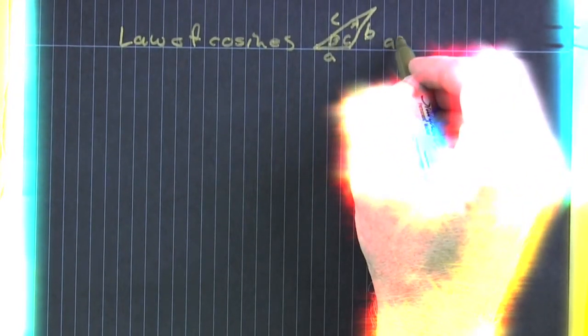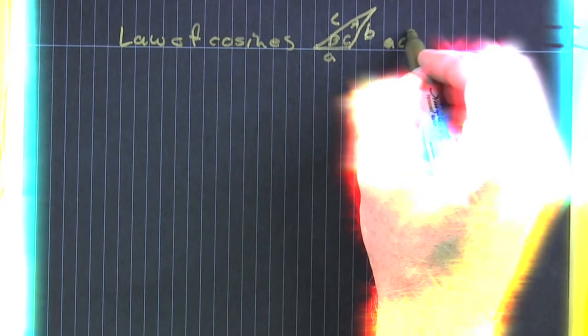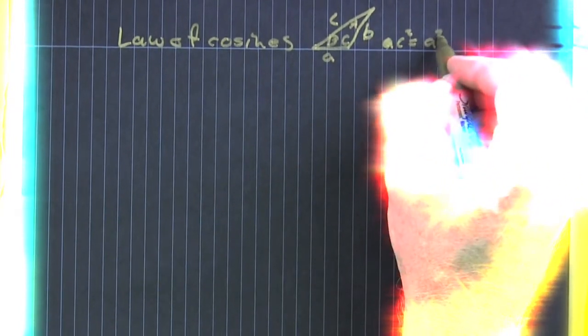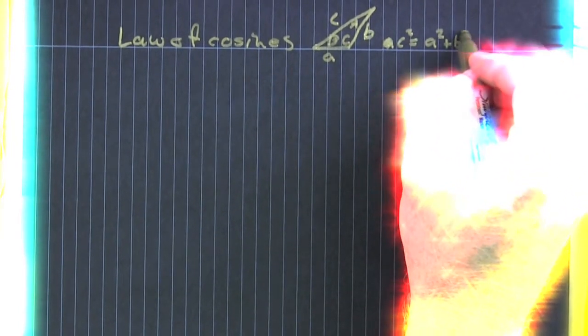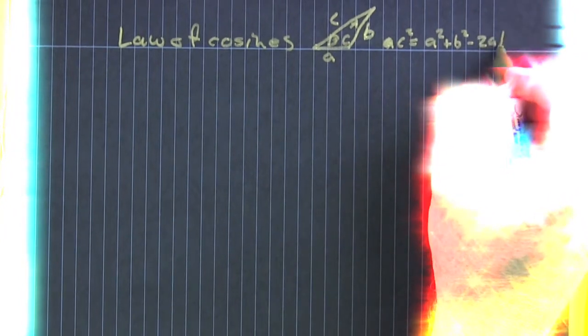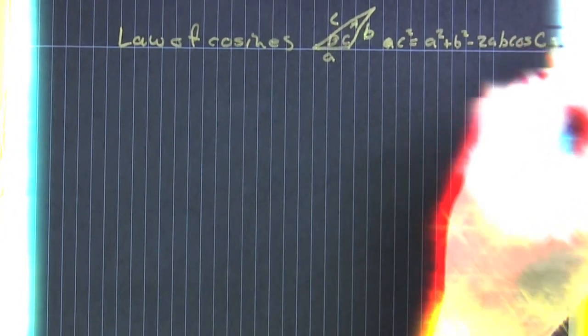And we see that, no, not that, that c squared is a squared plus b squared minus 2ab times the cosine of the angle between them, which is going to be big C.